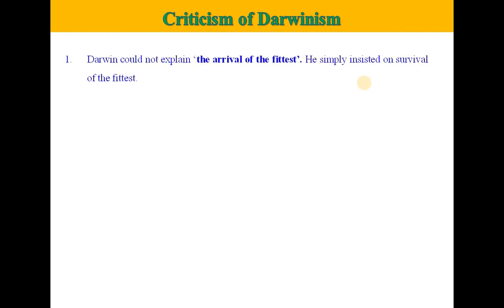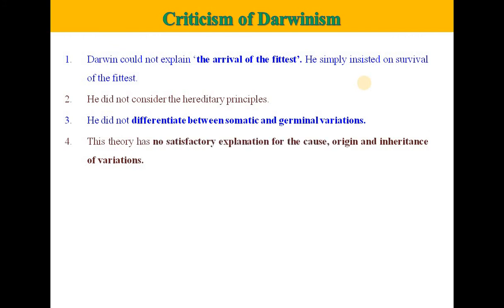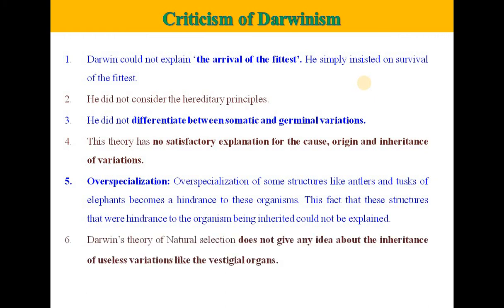What are the criticisms of Darwinism? First, Darwin could not explain the arrival of the fittest — he simply insisted on the survival of the fittest. Second, he did not consider the hereditary principle. Third, he did not differentiate between somatic and germinal variations. Fourth, the theory has no satisfactory explanation for the cause, origin, and inheritance of variation. Fifth, over-specialization of some structures like antlers and tusks of elephants becomes a hindrance to these organisms, which Darwin could not explain. Also, Darwin's theory gives no idea about the inheritance of useless variations like vestigial organs.